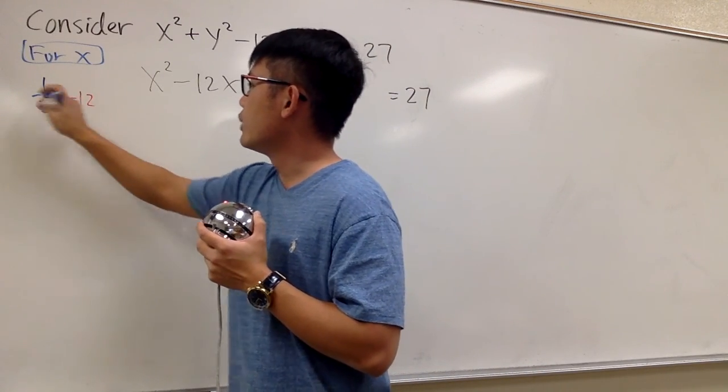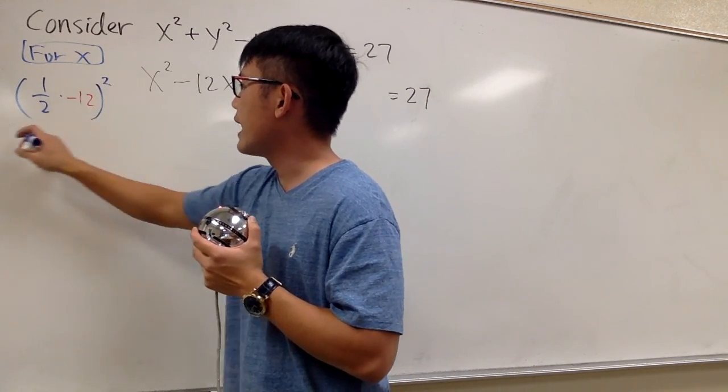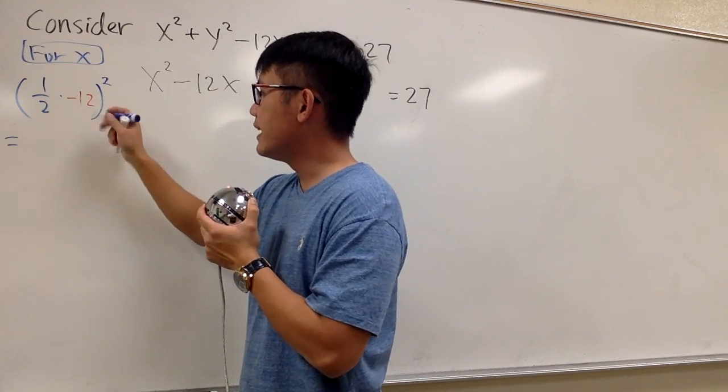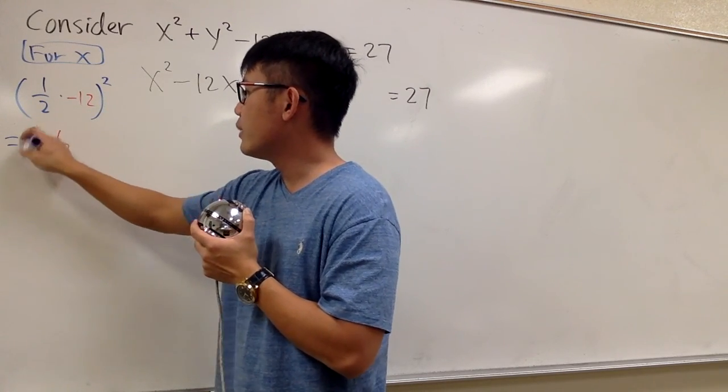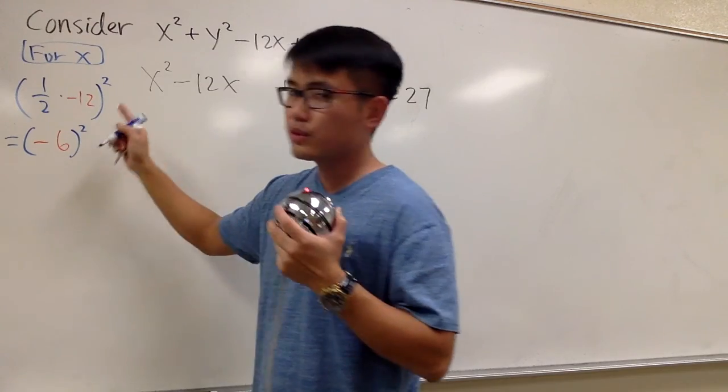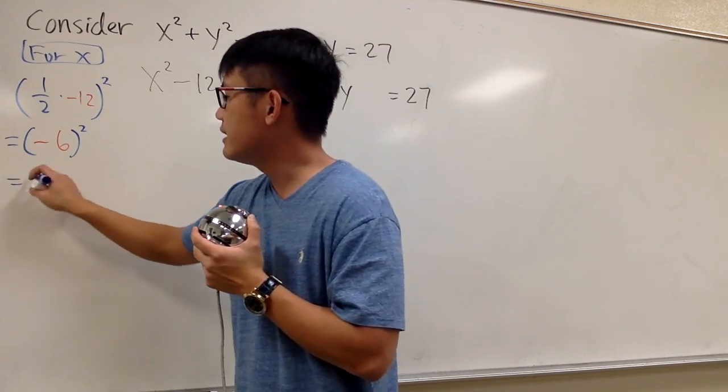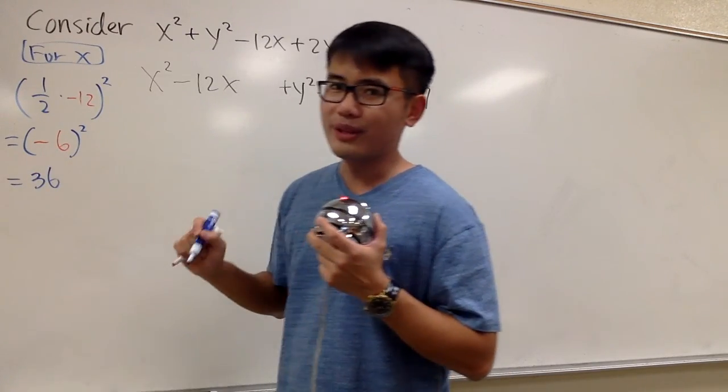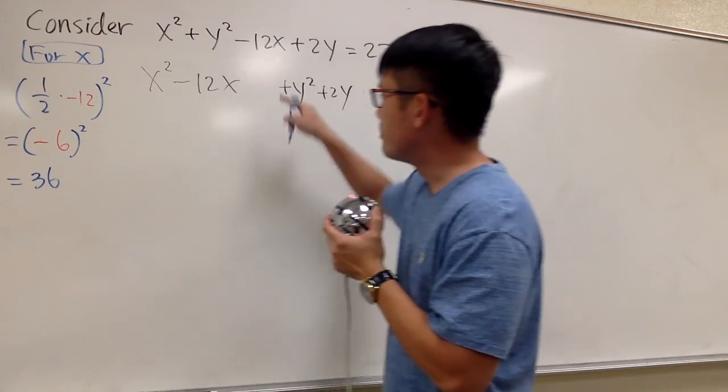So let's write that down, and then we'll put this in the parentheses and square that. 1 half times negative 12 is negative 6, and then we square this. Negative 6 squared will give us 36. And this is the magical number.